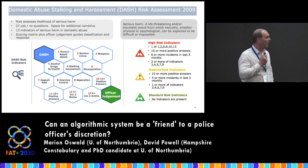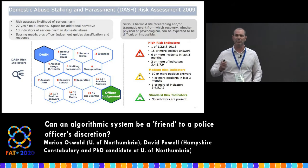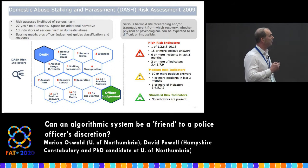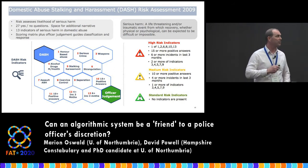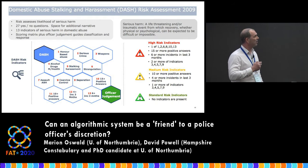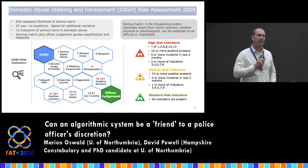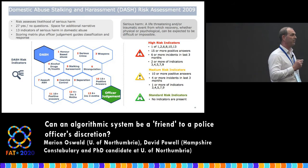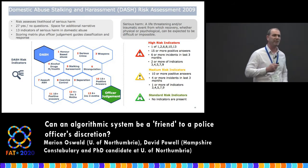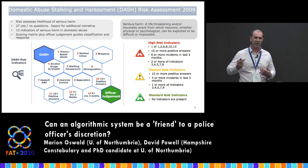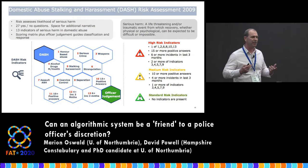The current domestic abuse risk assessment tool of choice in policing — used with agencies like children's services and social services — is the Domestic Abuse, Stalking and Harassment tool introduced in 2009. It risk assesses the likelihood of serious harm, not the likelihood of re-victimisation or perpetrator re-offending. Risk is defined as the likelihood of something happening, along with the impact that occurs when it does. High means the risk is imminent; medium means serious harm risk still exists but requires a trigger; and standard risk is at the bottom.